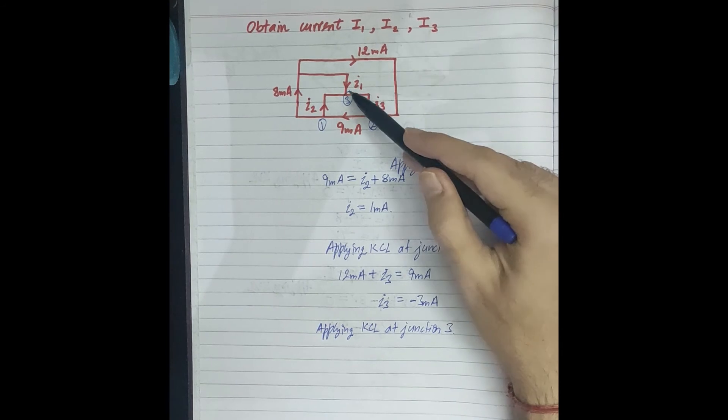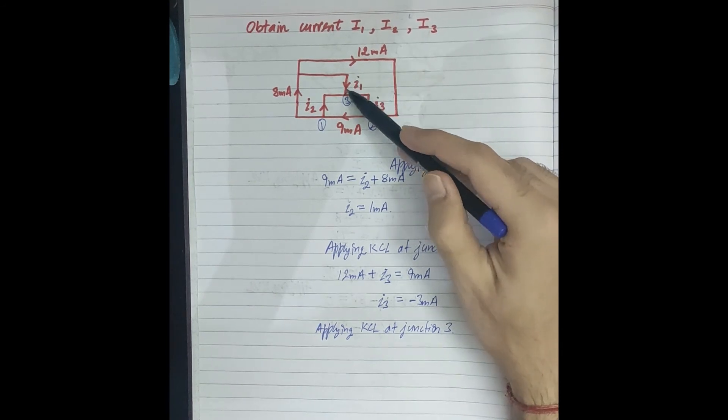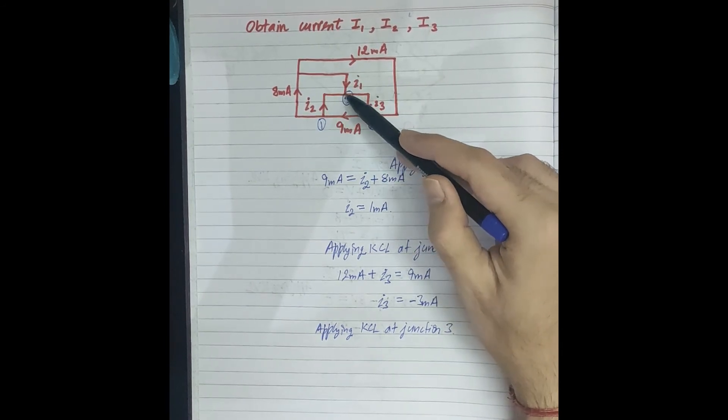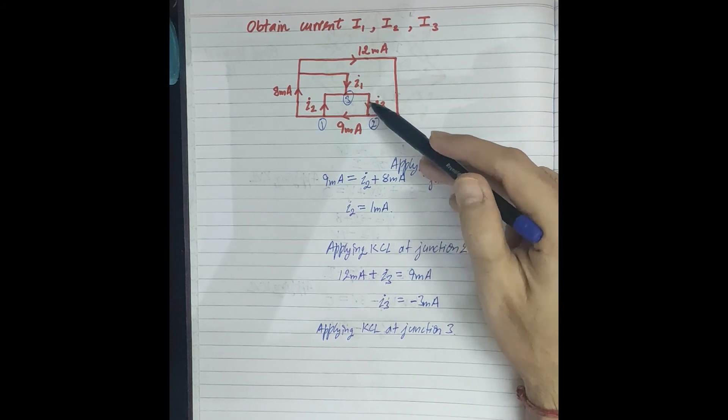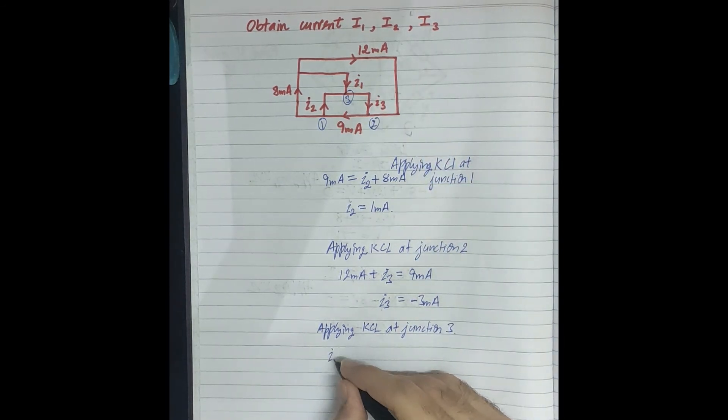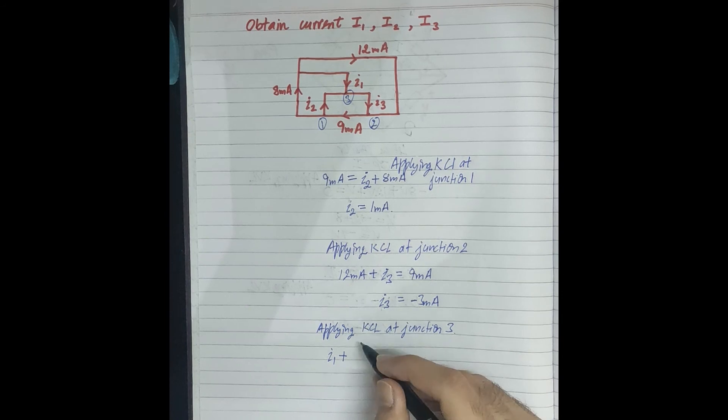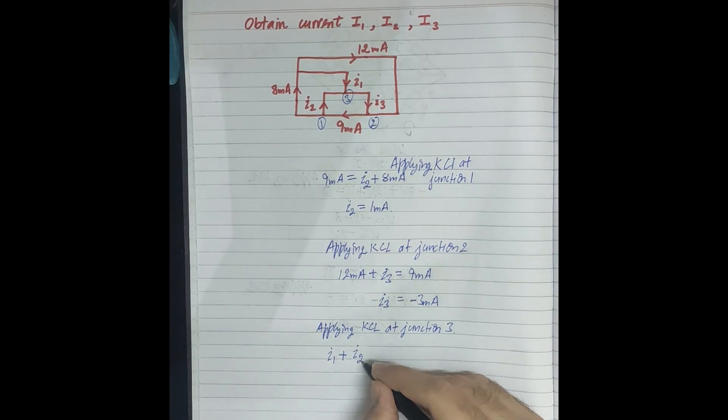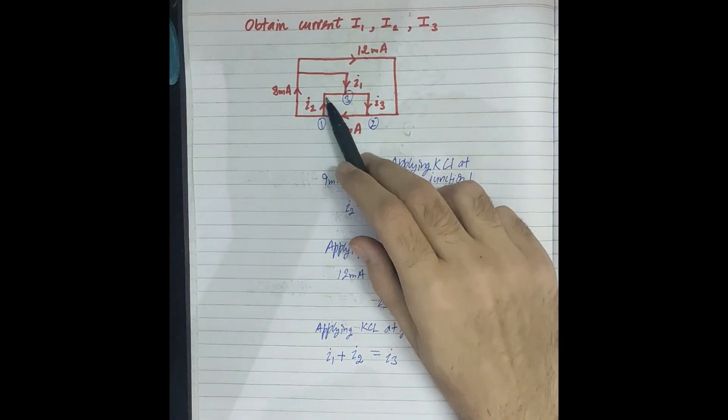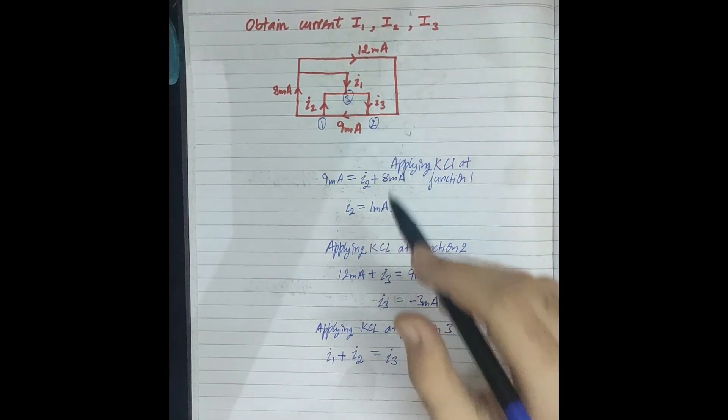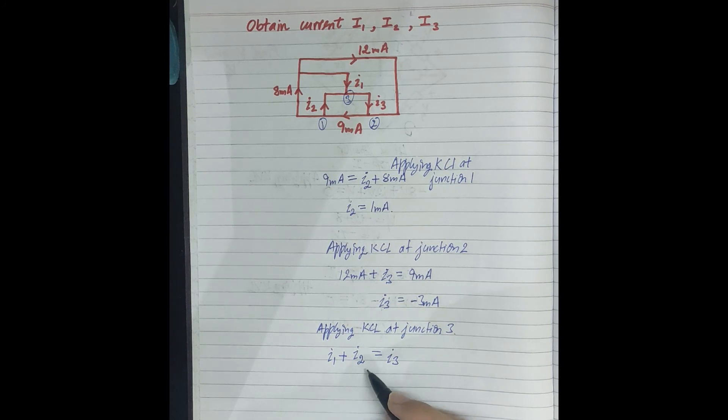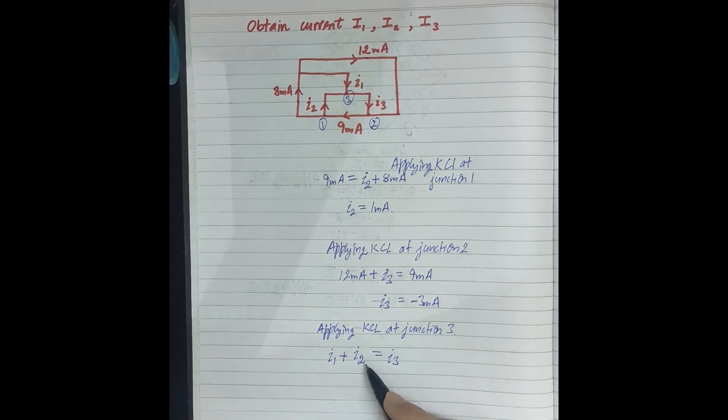In this junction, the incoming currents are I1 and I2, and the outgoing current is I3. So I1 plus I2 equals I3.